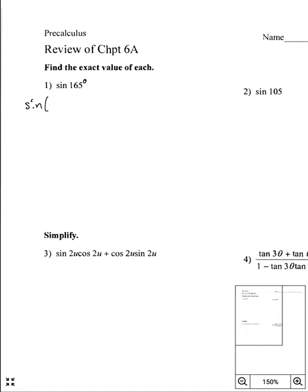Since it ends in 5, I'm probably going to think I'll use 45. And so if I did 45 and 120, those are two angles that are on our unit circle. So we can do 120 plus 45. Now, we can't just split these up — it's not equal to sine of 120 plus sine of 45. We have to use one of our identities.